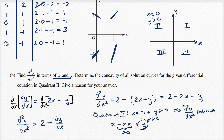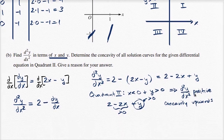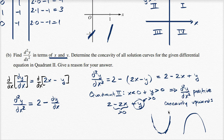A positive second derivative means that our slope is increasing, which means concavity is upward. To remember: if you draw a concave-up curve, you can see the slope is turning less negative and becoming more positive — it's increasing. Second derivative positive means concave upward; second derivative negative means concave downward.